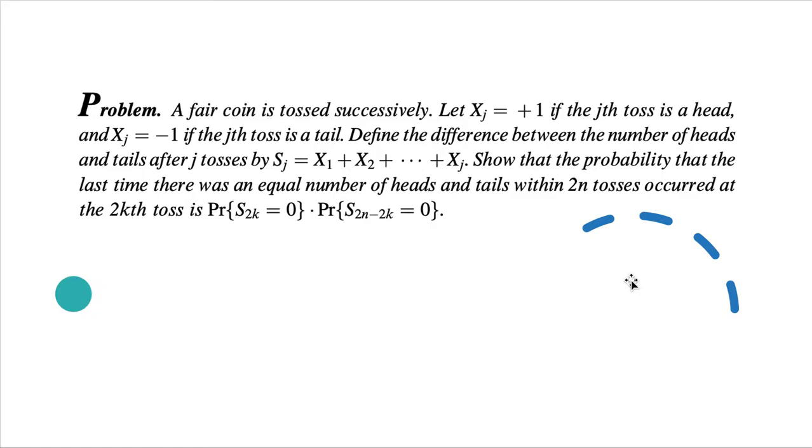Define the difference between the number of heads and tails after j tosses by S_j = X_1 + X_2 + ... + X_j. Show that the probability that the last time there was an equal number of heads and tails within 2n tosses occurred at the 2k-th toss is Pr(S_2k = 0) · Pr(S_2n-2k = 0).